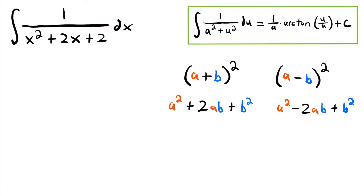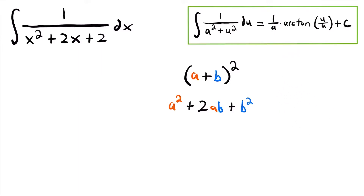To fix that and get this function into a form we know how to integrate, we complete the square. There's a pretty simple process we can follow. If we compare this quadratic function to the general perfect square form, notice that our middle term is positive, so we'll use the (a + b)² expression. We compare the middle term of our quadratic to the middle term 2ab of the general form.